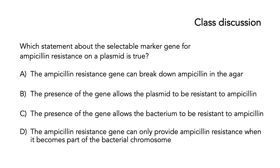Here's another class discussion. Which statement about the selectable marker gene for ampicillin resistance on a plasmid is true? A: the ampicillin resistance gene can break down ampicillin in the agar. B: the presence of the gene allows the plasmid to be resistant to ampicillin. C: the presence of the gene allows the bacterium to be resistant to ampicillin. Or D: the ampicillin resistance gene can only provide resistance when it becomes part of the bacterial chromosome. Think about this, stop the video, and figure out the answer.